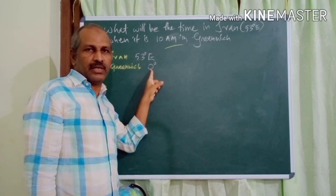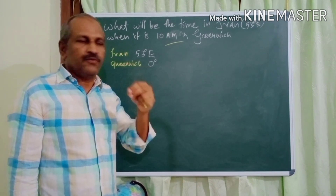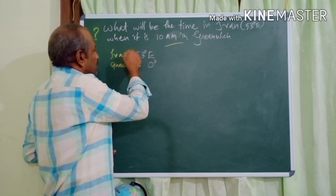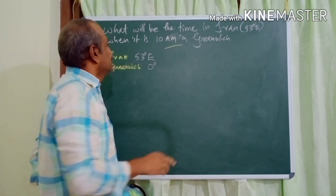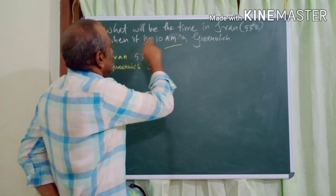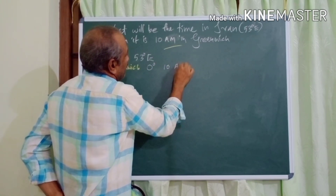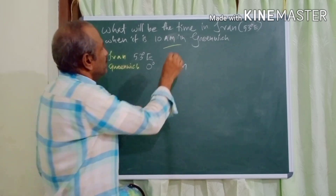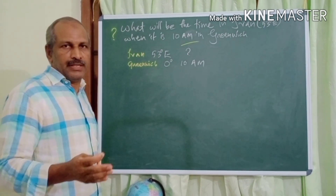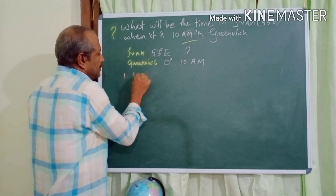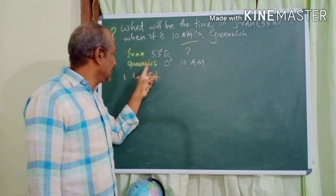Remember while calculating time, the longitude of the standard meridian of two countries. One is England — that is zero degree longitude. The other one is our country, India — 82 and a half degrees east. So the two places are identified. The time of one place is given here — that is Greenwich. Greenwich time is given: 10am. So we have to find out the time of Iran.